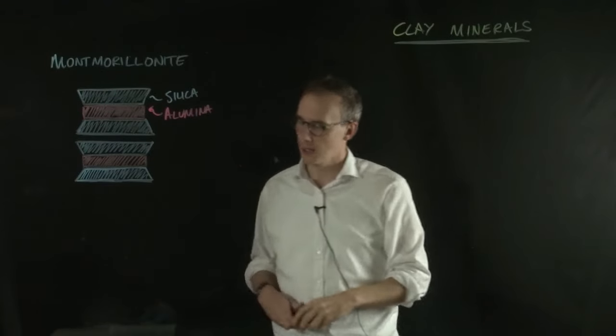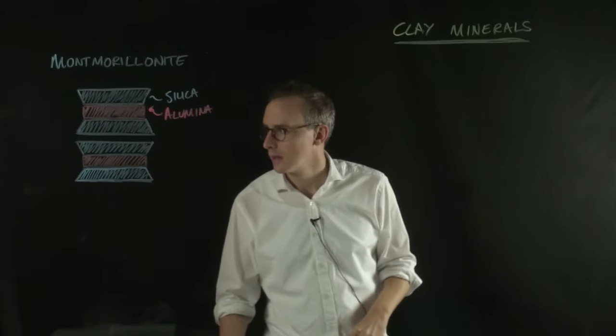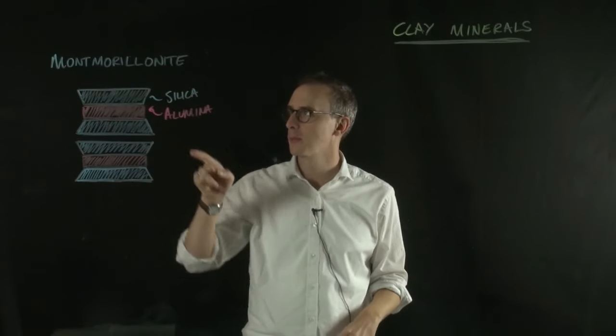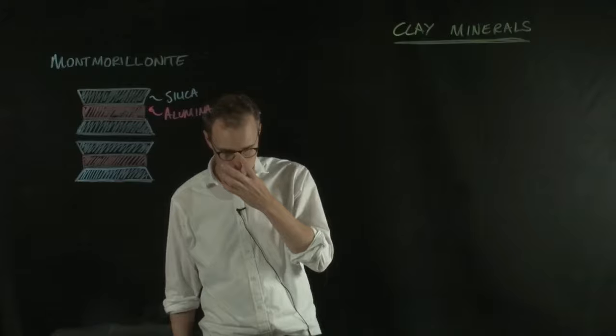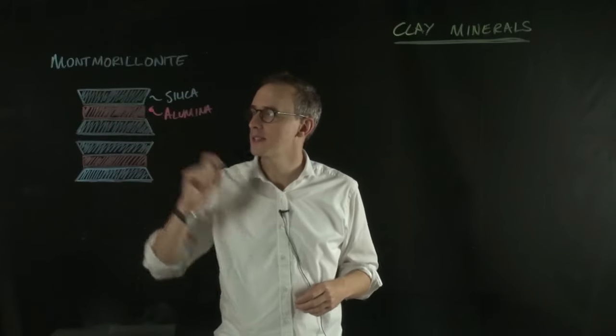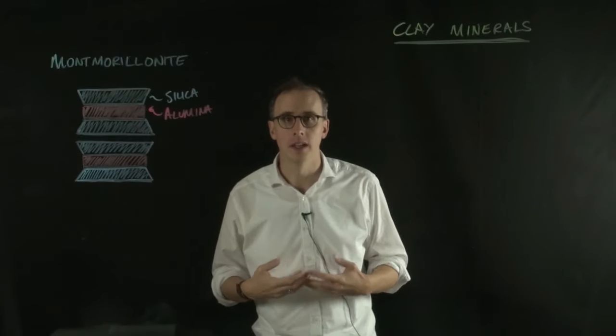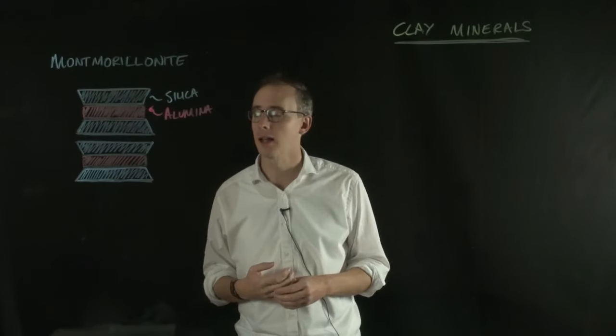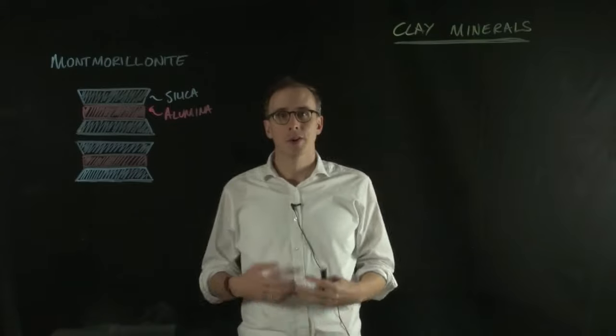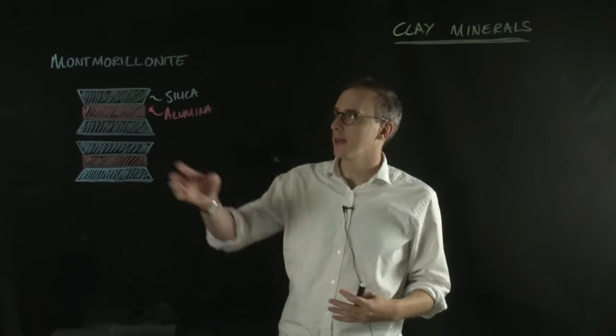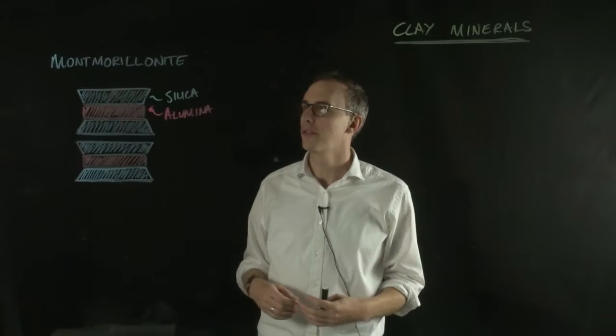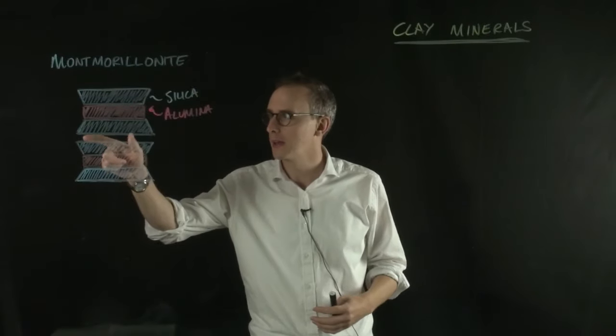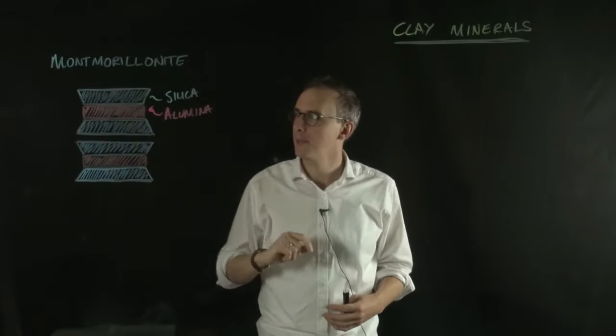For montmorillonite, the arrangement looks like this, where we have essentially a silica layer, alumina layer sandwiched between two silica layers. What joins these layers together is the sharing of oxygen atoms or hydroxyl groups. In smectite clays like montmorillonite, we have three layers, and they're joined together to another three layers by an interstitial gap here.